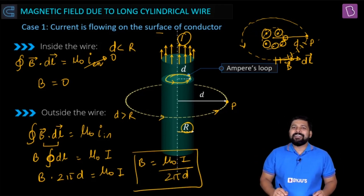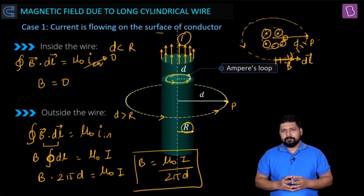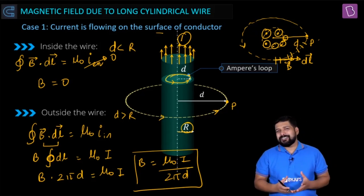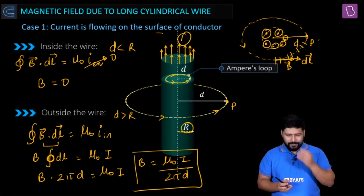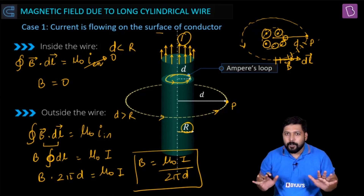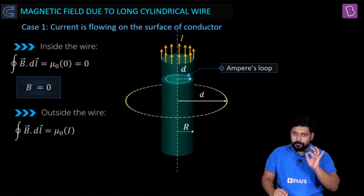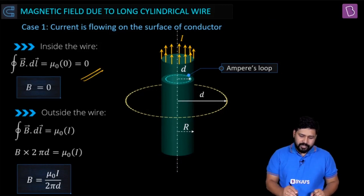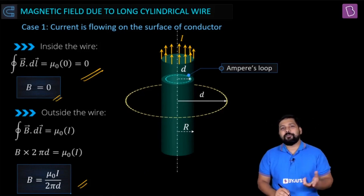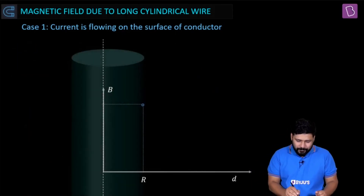This is the result: inside the wire B equals zero, outside the wire B equals mu naught I divided by 2 pi d. The application of Ampere's circuit law is very significant and it's all about understanding and visualization — the mathematical complexity is just the dot product. Now let's plot a graph. Till the point inside, B will be zero.